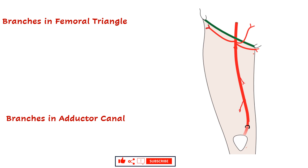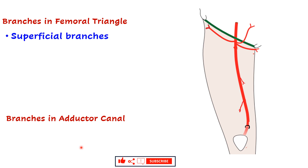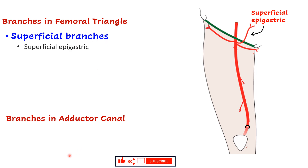Let us now look at the branches of the femoral artery. The femoral artery gives a few branches in the femoral triangle and some in the adductor canal. In the femoral triangle the branches are divided into two groups: superficial branches and deep branches.